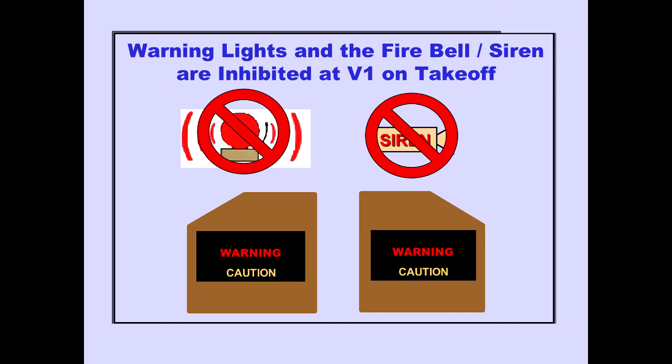The bell, beeper, and master warning and caution lights are inhibited to prevent distractions during takeoff. During part of the takeoff, the master warning lights and the fire bell are inhibited for the ICAST warning message fire, and the master warning lights and siren are inhibited for the ICAST warning messages cabin altitude and overspeed. The inhibit begins at V1 and ends at either 400 feet radio altitude or 25 seconds after V1, whichever occurs first.